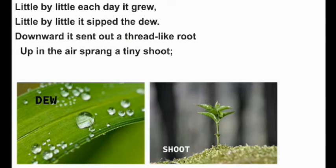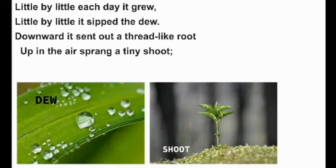'Downward it sent out a thread-like root.' Thread hota hai dhaga — jab roots nikalti hain toh stem niklne ke time mein bahut patli si hoti hain, dhage ke samaan roots isne zameen ke andar bheji. 'Up in the air sprang a tiny shoot.' And shoot is the foremost part of a plant jisme se plant grow karta hai, jisme se pattiyaan nikalti hain. Jab beej mein se plant zameen ke upar aata hai, us part ko hum shoot kehte hain. Here you can see the picture of a shoot.